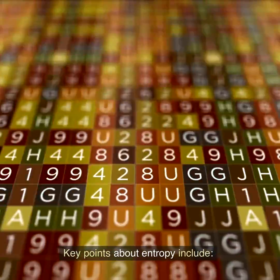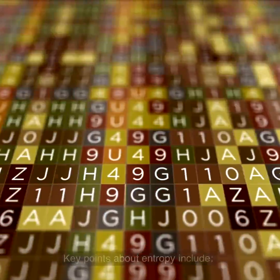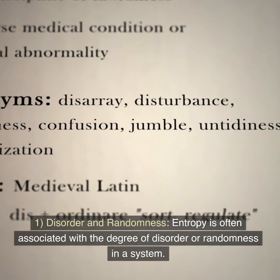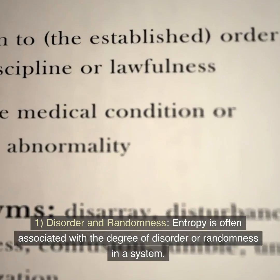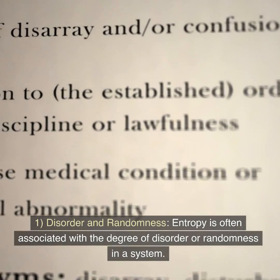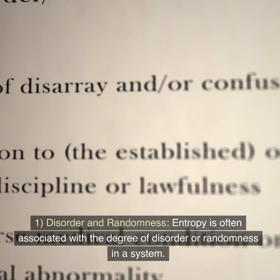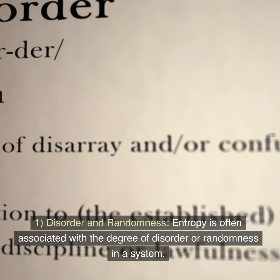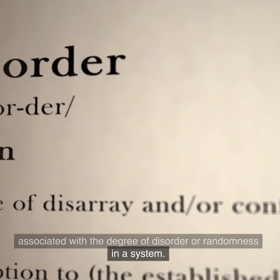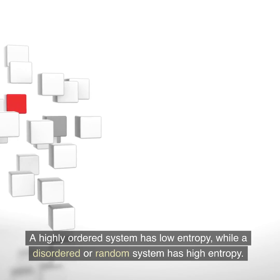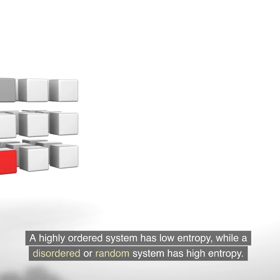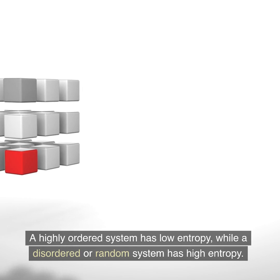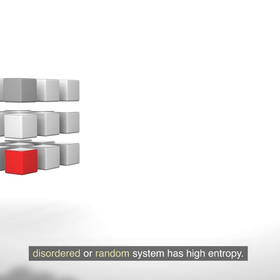Key points about entropy include: 1. Disorder and randomness. Entropy is often associated with the degree of disorder or randomness in a system. A highly ordered system has low entropy, while a disordered or random system has high entropy.